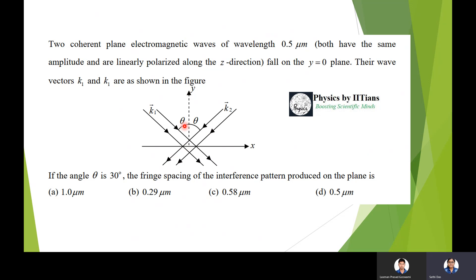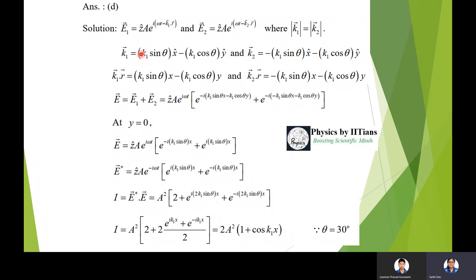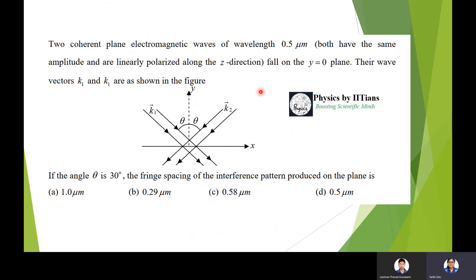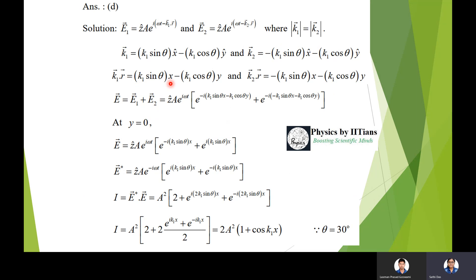To write k·r, we need the components of k along the x and y directions. Resolving k1 and k2: k1 = k1·sinθ x-cap − k1·cosθ y-cap, and k2 = −k1·sinθ x-cap − k1·cosθ y-cap. For k·r, we take r = x i-cap + y j-cap, so k1·r = k1·sinθ · x − k1·cosθ · y.